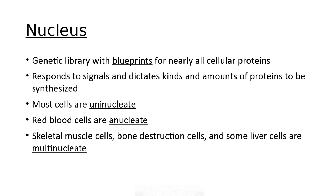The nucleus is the genetic blueprint for cellular proteins and carries the signal to make all the proteins. Every nucleus in every cell of your body has the code to make all of you, theoretically. Most cells have one nucleus — they're uninucleate. Some cells have no nucleus; a means without. They have them when they're immature but lose them. Bone destruction cells and some liver cells are multi-nucleate.